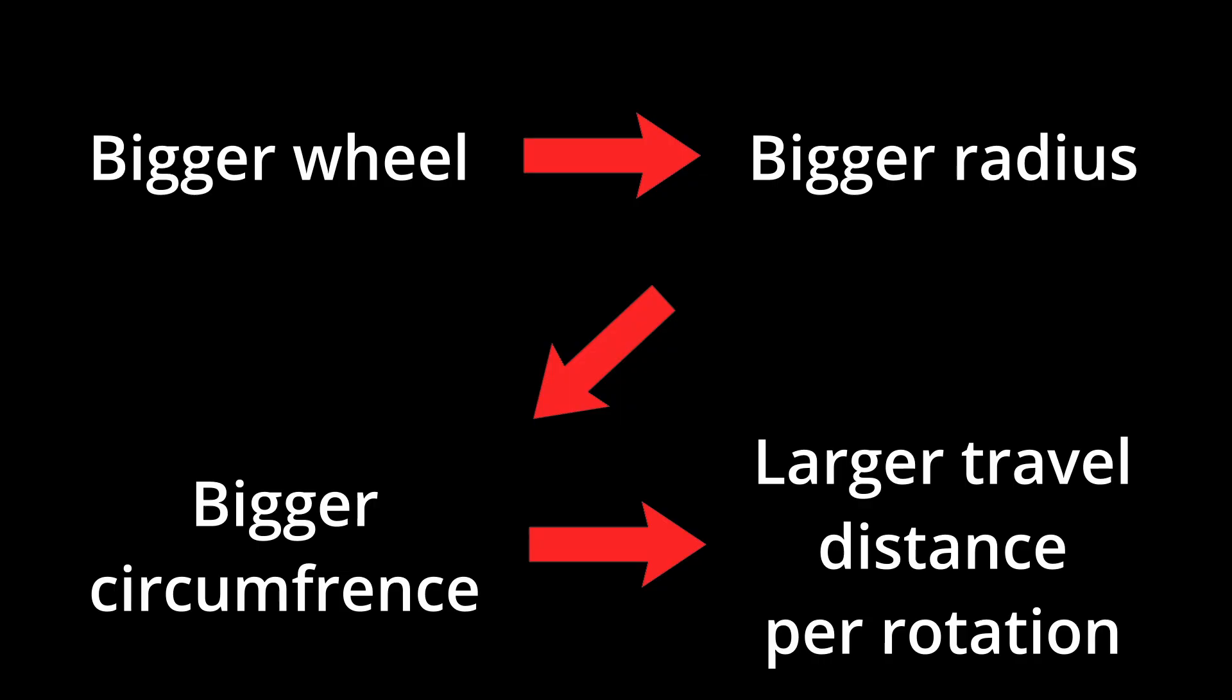Larger wheels are faster than smaller ones, and with the same RPM you can travel a larger distance.